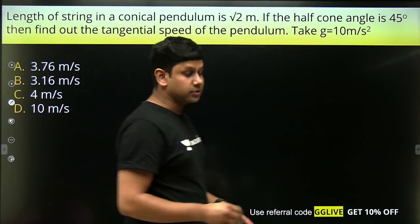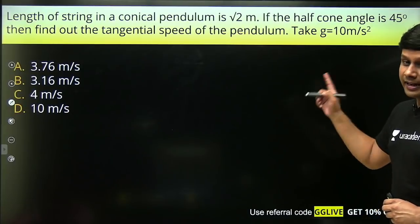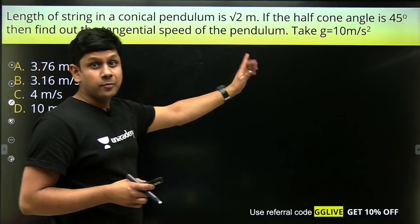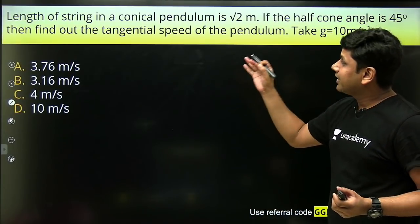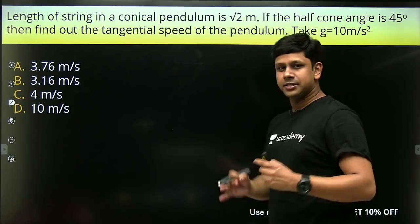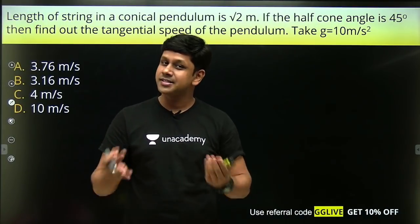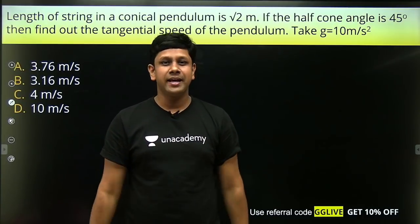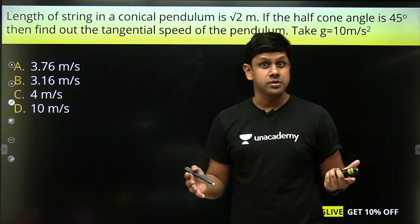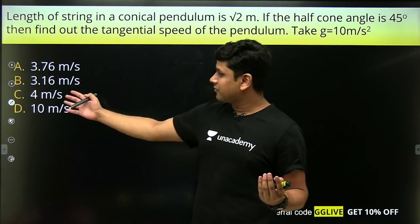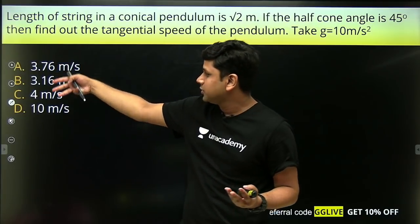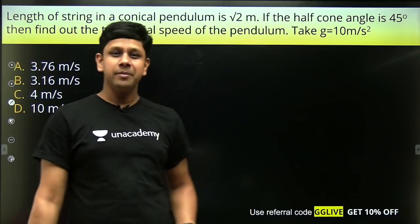Let us try a question: the length of the string in a conical pendulum is √2 meters, the half cone angle is 45°. Find the tangential speed of the pendulum. Take g = 10 m/s². The options are 3.76 m/s, 3.16 m/s, 4 m/s, and 10 m/s.